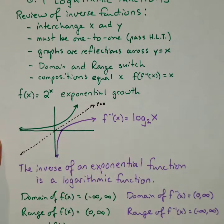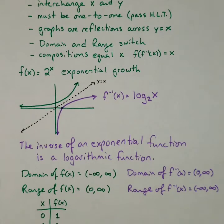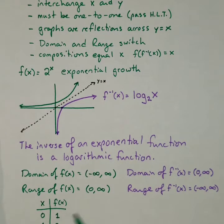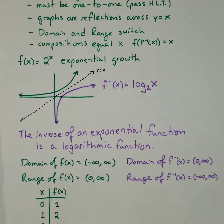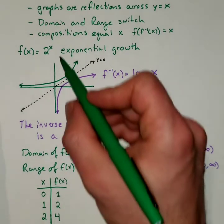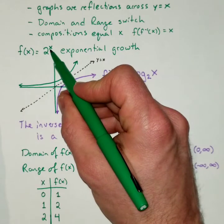So first of all, the y-intercept occurs when x is 0, and I'll reveal a couple of these points as I go. So if I plug a 0 in, 2 to the 0 is 1, because anything to the 0 is 1. If I plug in a 1, 2 to the 1 is 2. If I plug in a 2, 2 squared is 4.